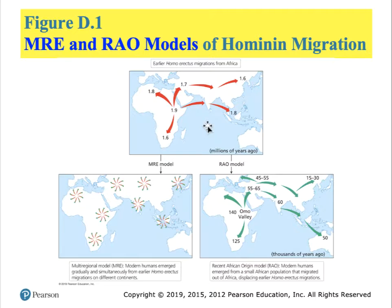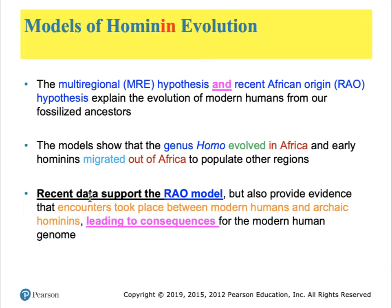According to the ROA model, there were two migrations: the initial one about two million years ago, and then more recently, about 150,000 to 200,000 years ago, a second migration of descendants of the first populations. These peoples were thought to have displaced and/or interbred with the human-like creatures from the first migrations, of which Neanderthals are the most famous. Recent scientific data supports the ROA model more than the MRE model, though it suggests that breeding encounters took place between modern humans and the existing primary wave of hominins.